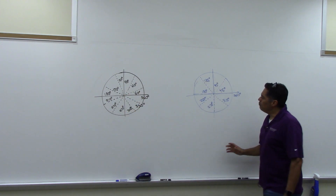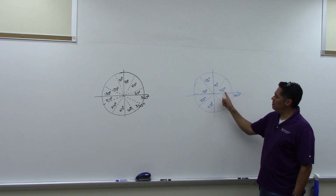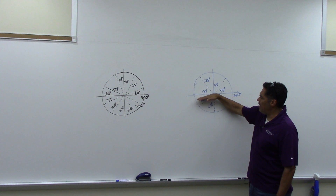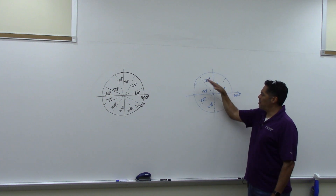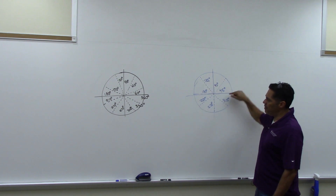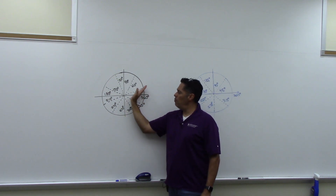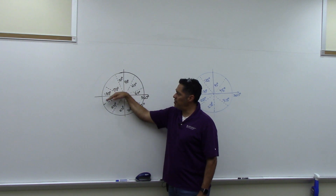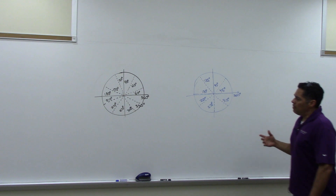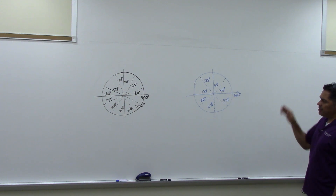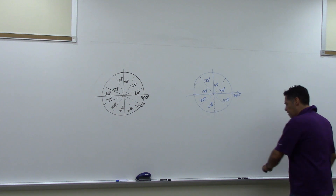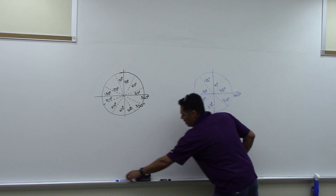One thing to point out: with the 45s, from 0 to 180, they cut the top into four equal groups and four on the bottom. With the 30s, you get six equal groups on top and six on the bottom. Now, the other measurement we use is radians. The way radians work is the same picture but in a different unit.